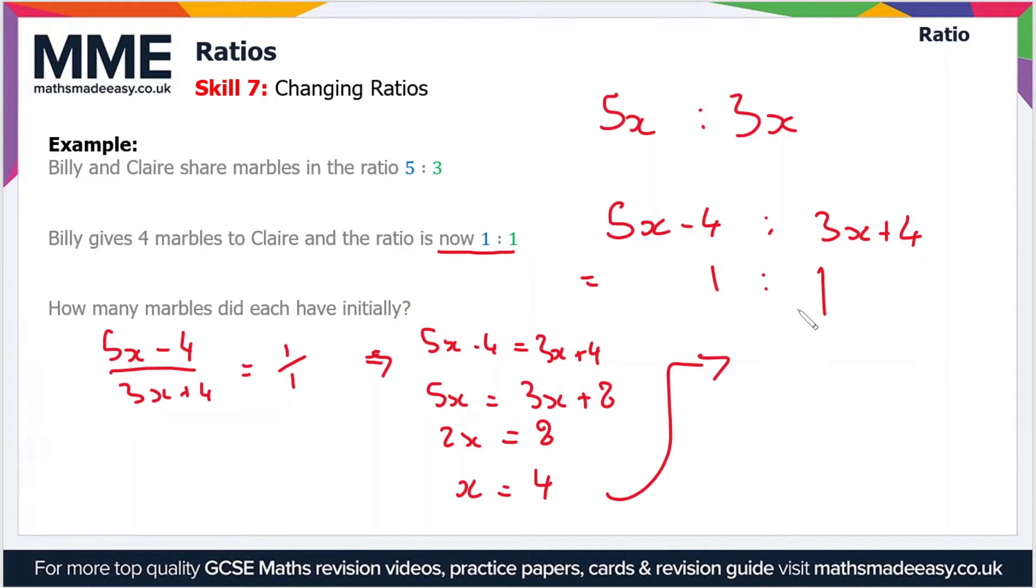Bringing this working up here, we substitute this value of x into the initial ratio, which is 5x:3x. So 5 times 4 is 20 and 3 times 4 is 12. Initially, Billy had 20 marbles and Claire had 12.